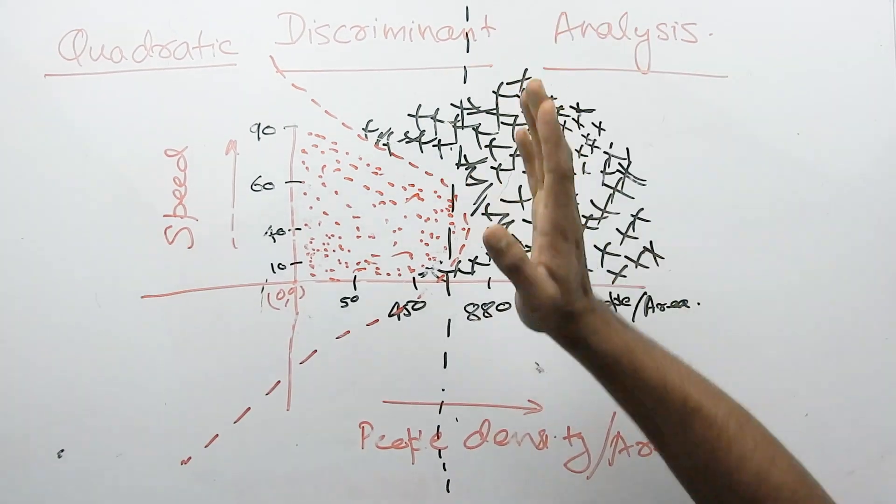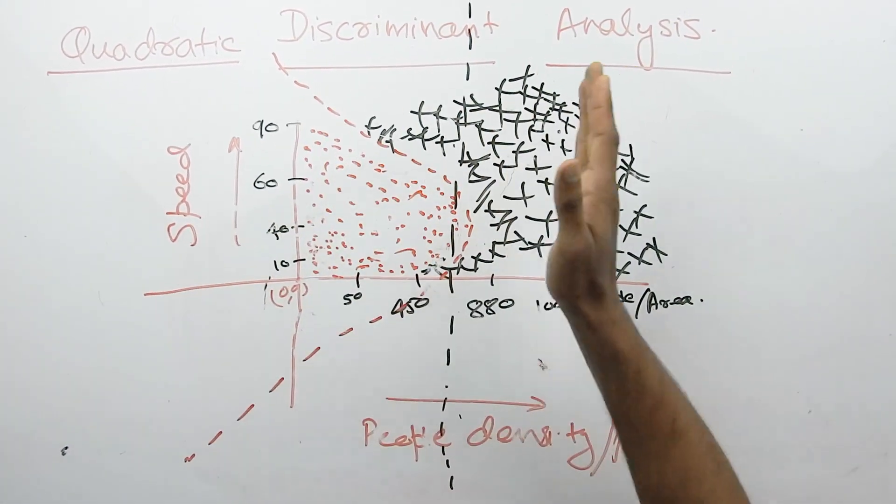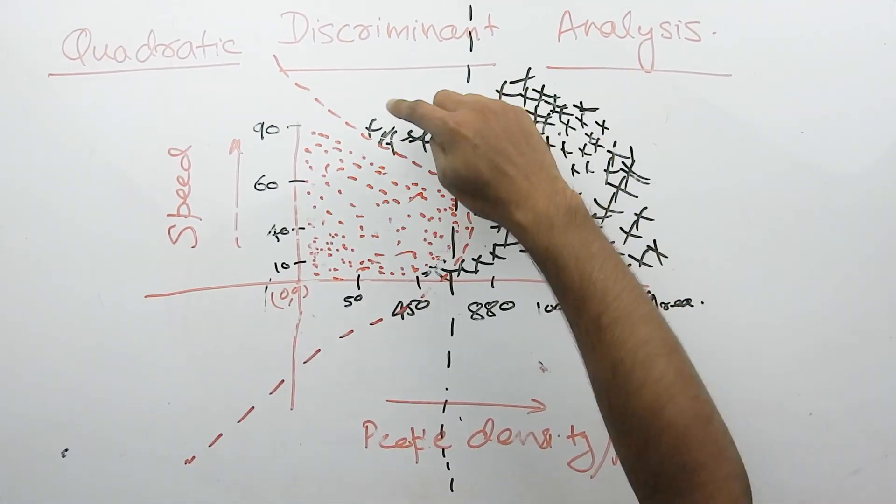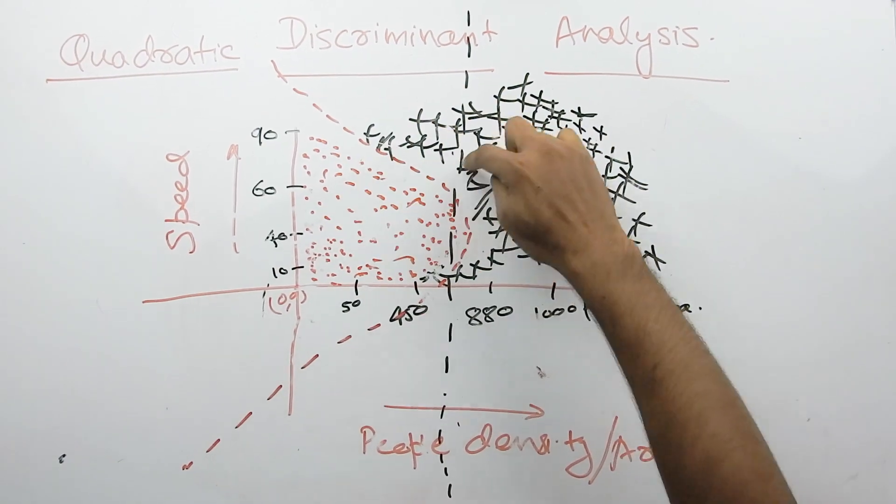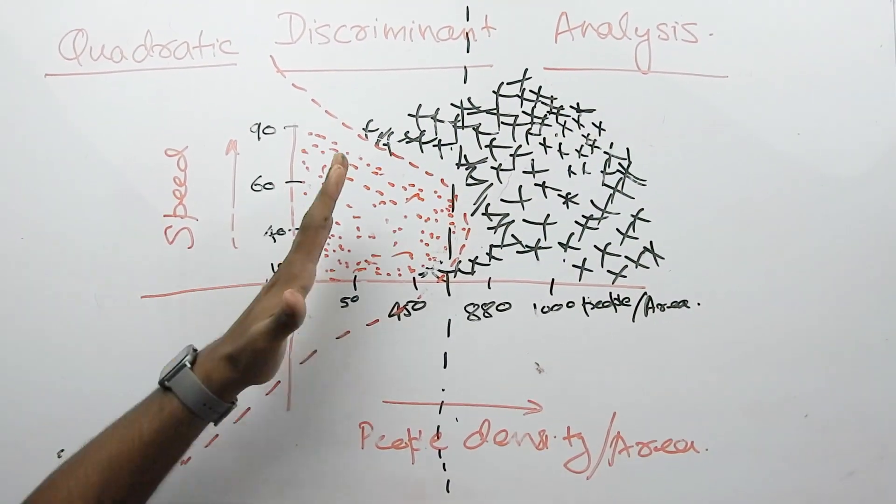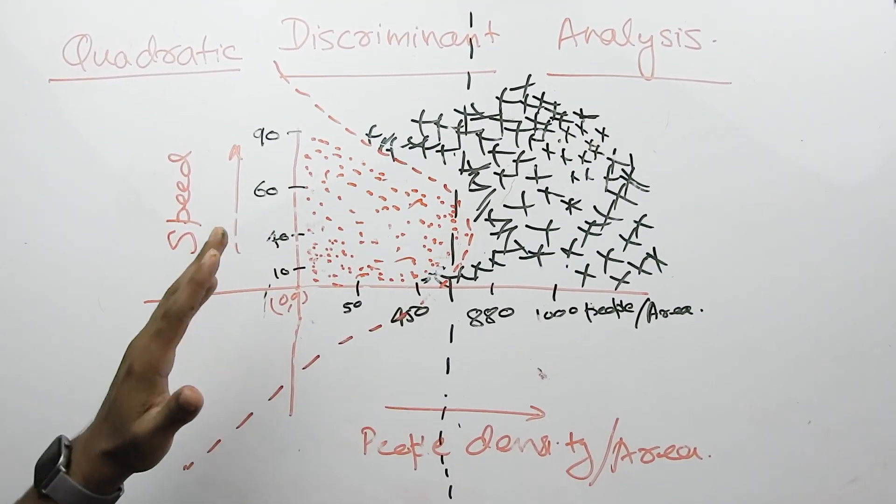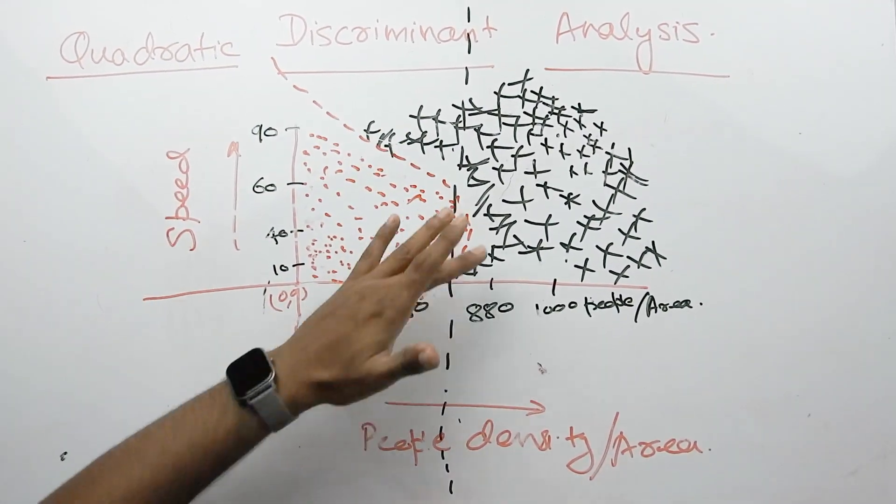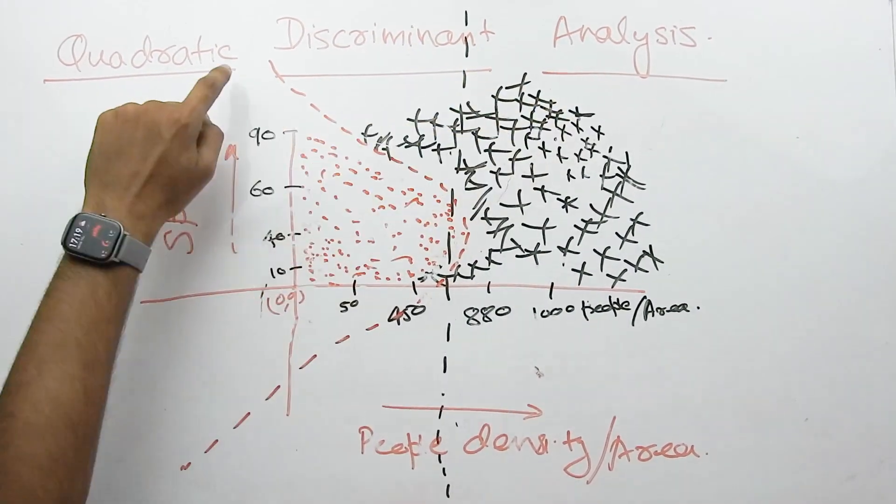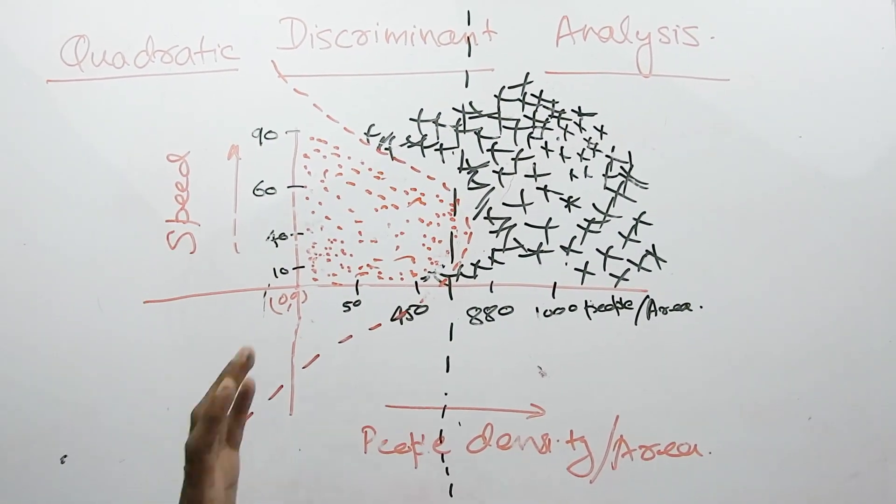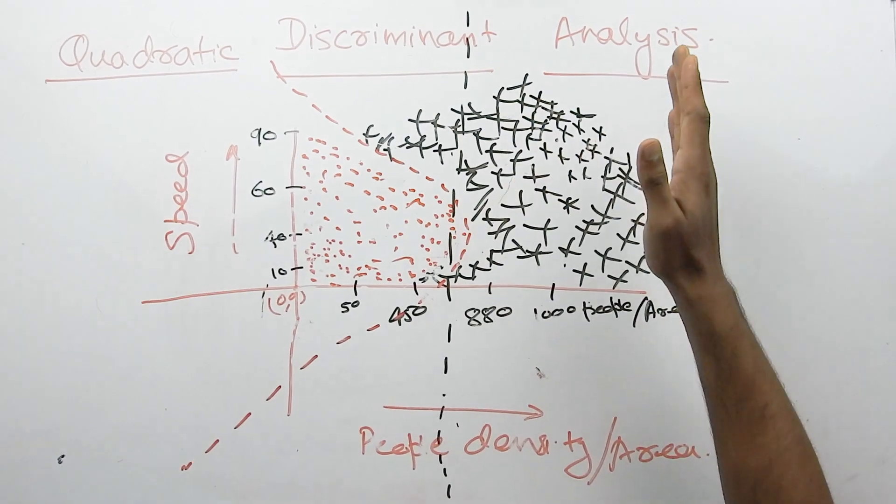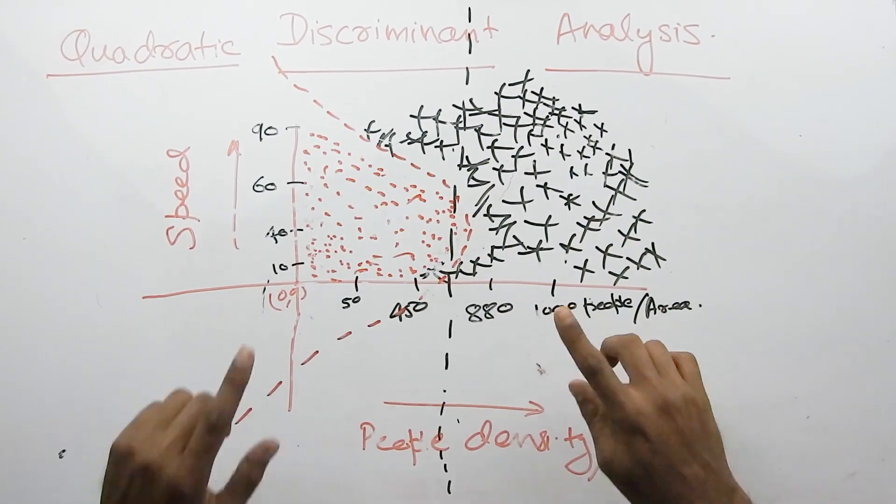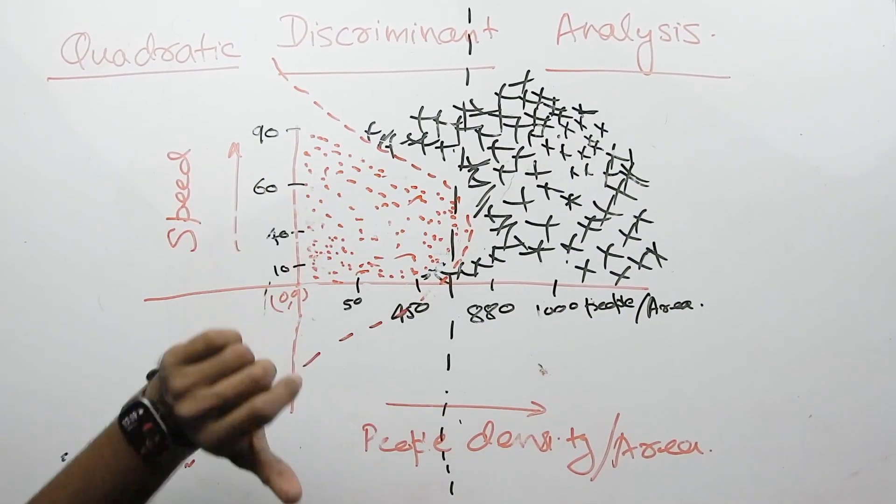If we use linear models, we classify it in class A and class B, but we have this portion wrong. But, we need a curve which can classify this portion better. That means, quadratic discriminant analysis allows you to classify with a curve. So, let's try this in our system and let's see how the results are.